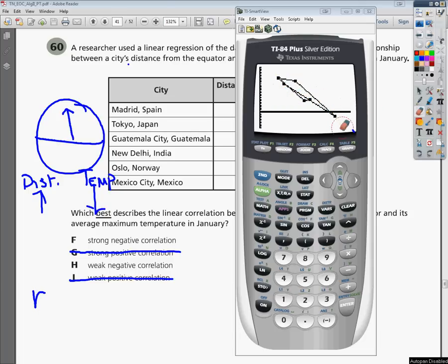Now, the correlation coefficient, of course, is an R value. It's the value that tells us how closely connected the data is or how close the fit they make to that line of best fit.